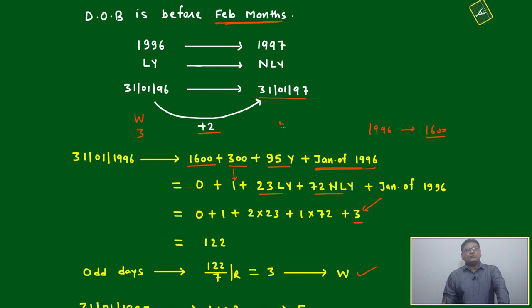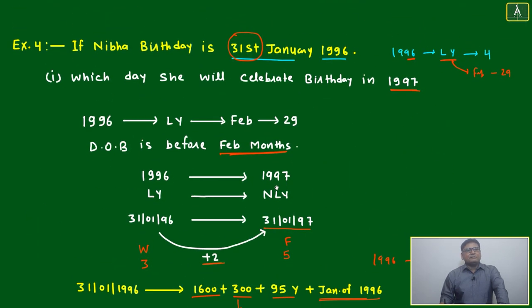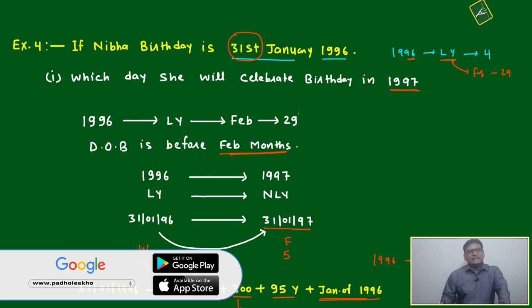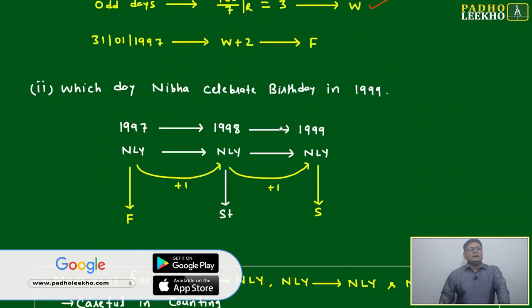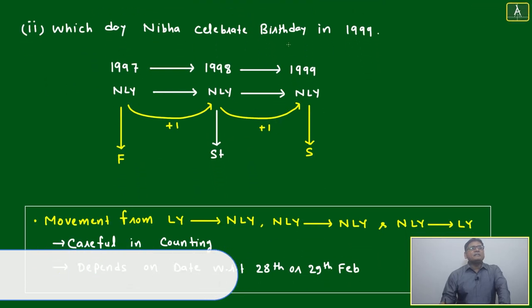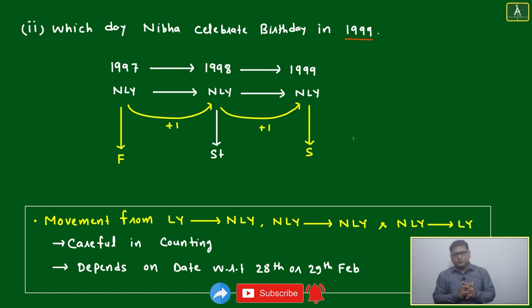Since 1996 is a leap year and the birthday is before February, we add 2 days. Wednesday is day 3; 3 + 2 = 5, which is Friday. So in 1997, she will celebrate her birthday on Friday. In 1996 she celebrated on Wednesday.